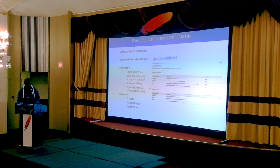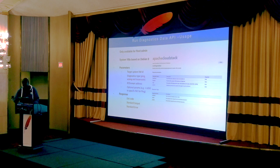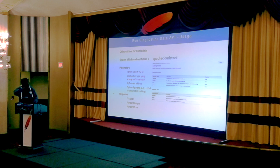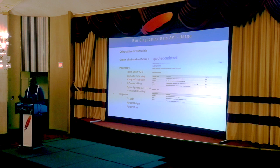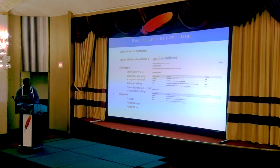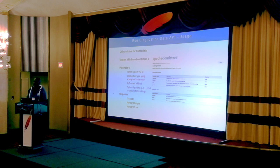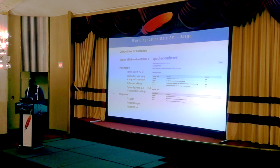The supported parameters include: the target system VM ID — the system virtual machine the operator wants to test; the diagnostics type, which can be ping, arping, or traceroute; the IP or domain address to test connection to; and optional parameters supported by each diagnostics type. The type of options the operator can pass are those which come packed with Debian 9, since current system virtual machines are built using a Debian 9 base.